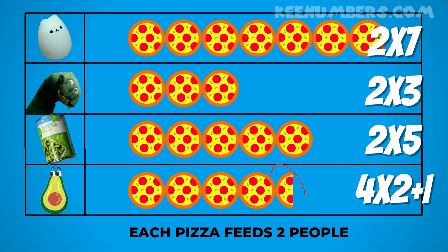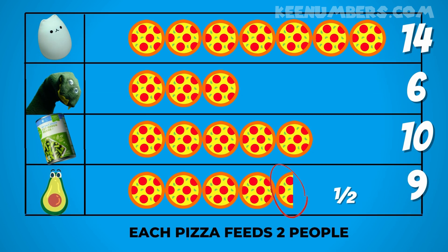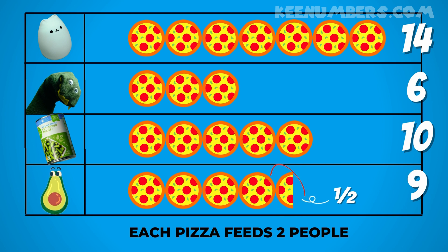The avocado has four pizzas and half a pizza, so that means four twos plus one extra person — four times two plus one — because each pizza feeds two people. That's why the avocado's pizzas can feed nine people. Green beans serves ten, greater gator six, and mega kitty fourteen because mega kitty had seven pizzas and each feeds two people — seven twos is fourteen.